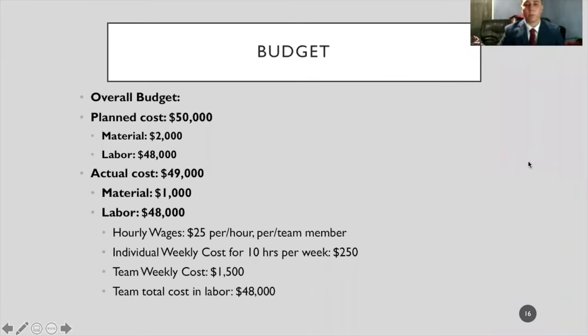Here we have the budget. For an overall budget, we had a planned cost of $50,000. That was material costing $2,000 and labor costing $48,000. When it came down to it, we had an actual cost of $49,000. We were able to save $1,000 on material through sourcing material through Meyer, and our labor remained $48,000. Our hourly wage was $25 per hour per team member. This resulted in individual weekly costs of $250 per team member. For the team weekly costs, we had a $1,500 overall cost. This resulted in a team cost of $48,000 throughout the duration of the project.